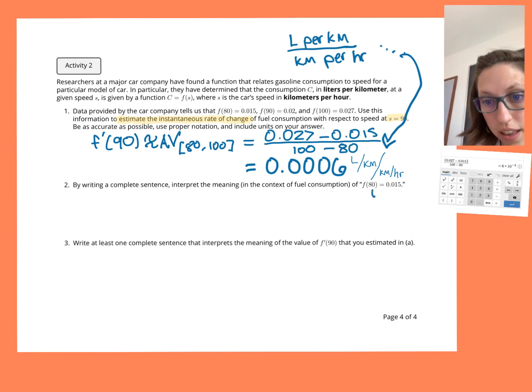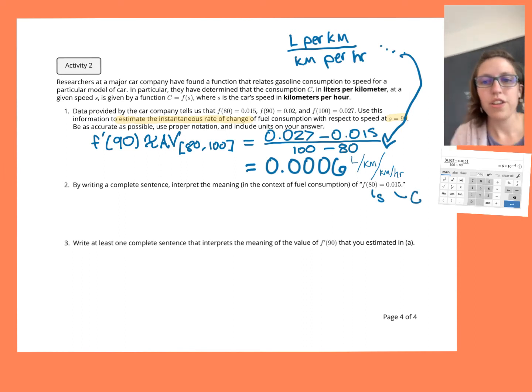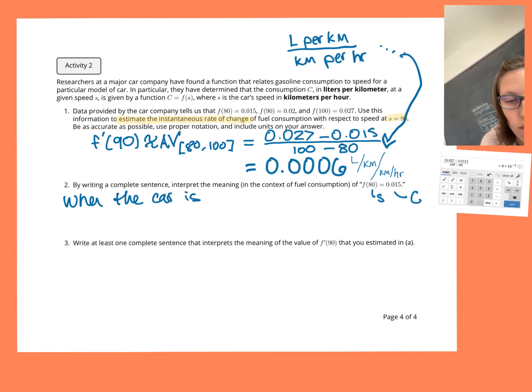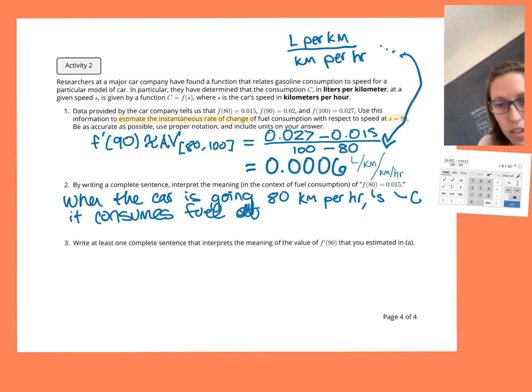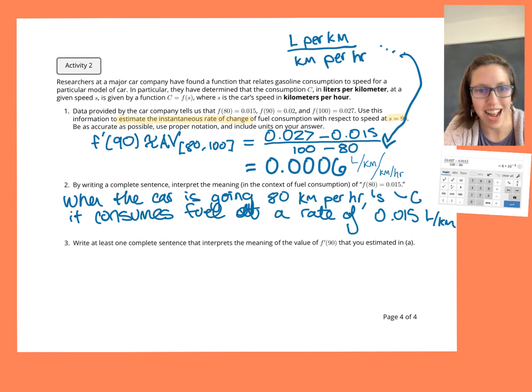So what does this mean? Well, 80, that's a speed. And this output, 0.015, that's the consumption. So what we're saying here is that gasoline consumption to speed for a particular model car. When the car is going, I will say going 80 kilometers per hour, it consumes fuel at a rate of 0.015 liters per kilometer. Sorry, I keep switching back between writing things with the word per over the little slash.